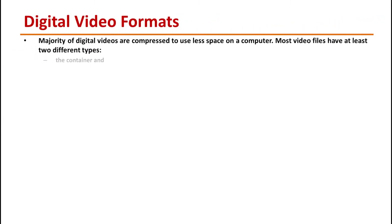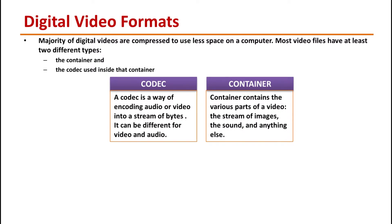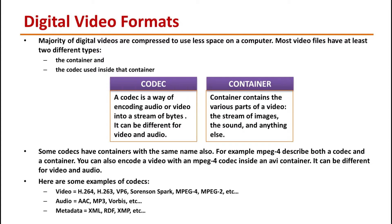Digital video files comprise millions of images arranged one after another in a systematic sequence. The majority of videos are compressed, meaning they have been altered to take up less space on a computer. Most video files have at least two different types: the container and the codec used inside that container. A codec is a way of encoding audio or video into a stream of bytes, whereas a container holds the various components of a video — the stream of images, the sound, and anything else. Container is associated with the file format. MPEG-4 is both a codec and a container; you can also encode a video with an MPEG-4 codec inside a different container.